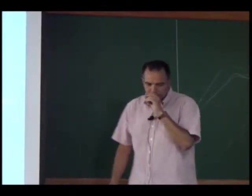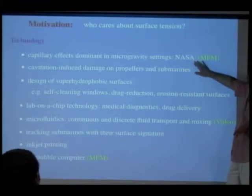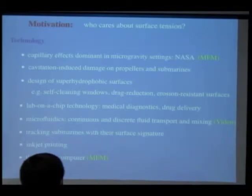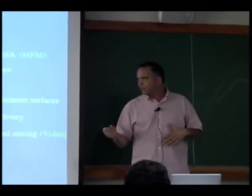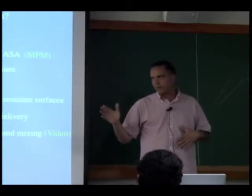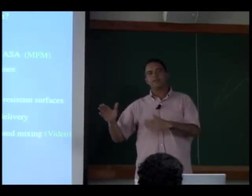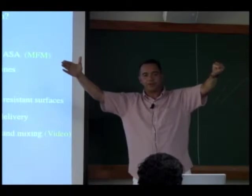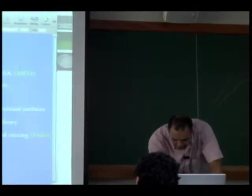Most funding for surface tension research came through the space agency. In outer space there's no gravity, so surface tension is very important. If there's a fluid spill on a space shuttle, the fluid just drifts around and can damage electronics. You can actually get the fluid to move using capillary effects — if you put a drop in zero gravity and apply a heat source, it will spontaneously move toward the heat source. We'll work through that problem.